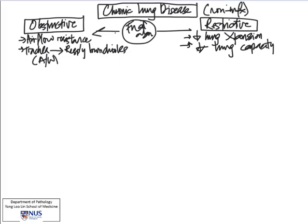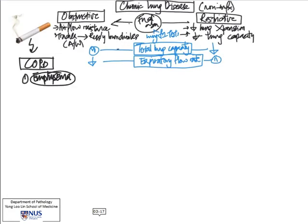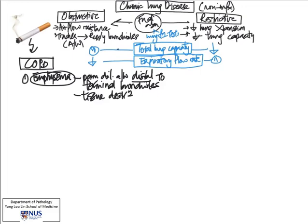The first entity we're going to talk about is emphysema. Emphysema is defined as a permanent dilatation of the smaller airways that are distal to the terminal bronchioles. There is also accompanying tissue destruction, but interestingly there is no scarring or fibrosis.